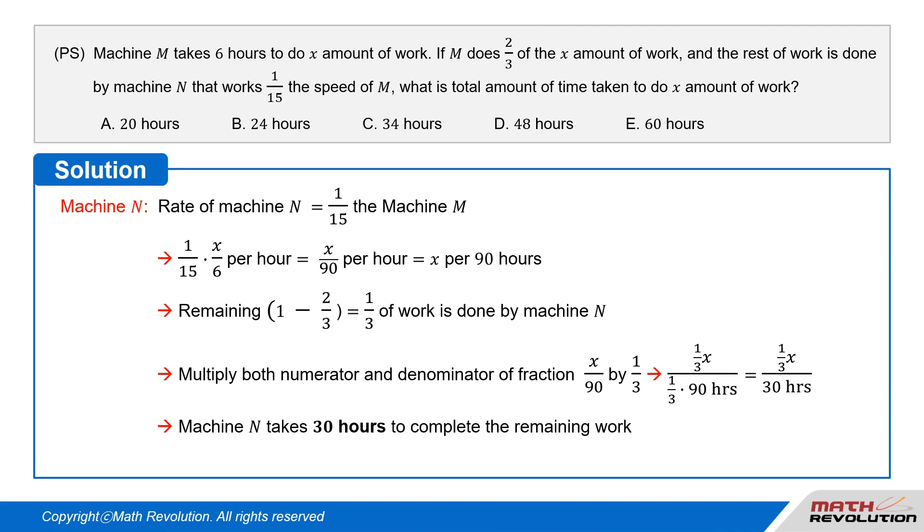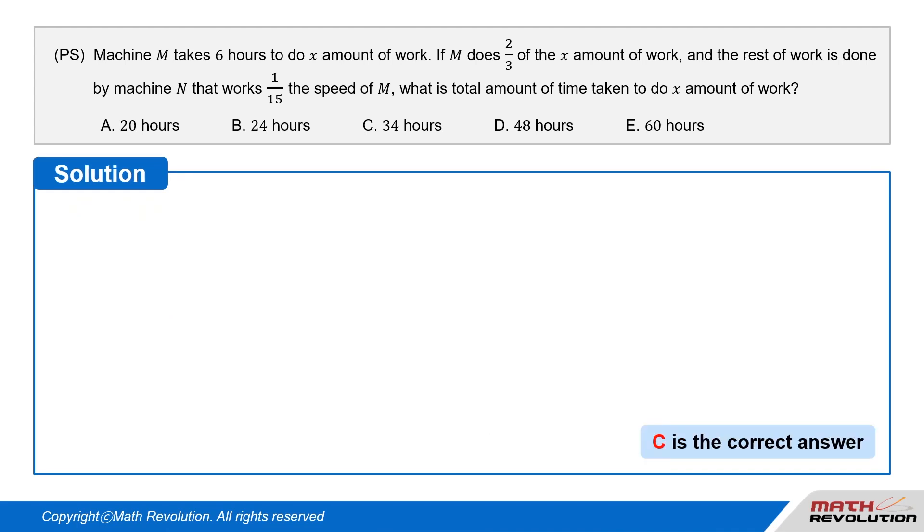Units are important, so remember to change the units by multiplying the numerator and denominator by the same number. Therefore, the total time taken to complete the work equals 4 hours + 30 hours = 34 hours. The correct answer is C.